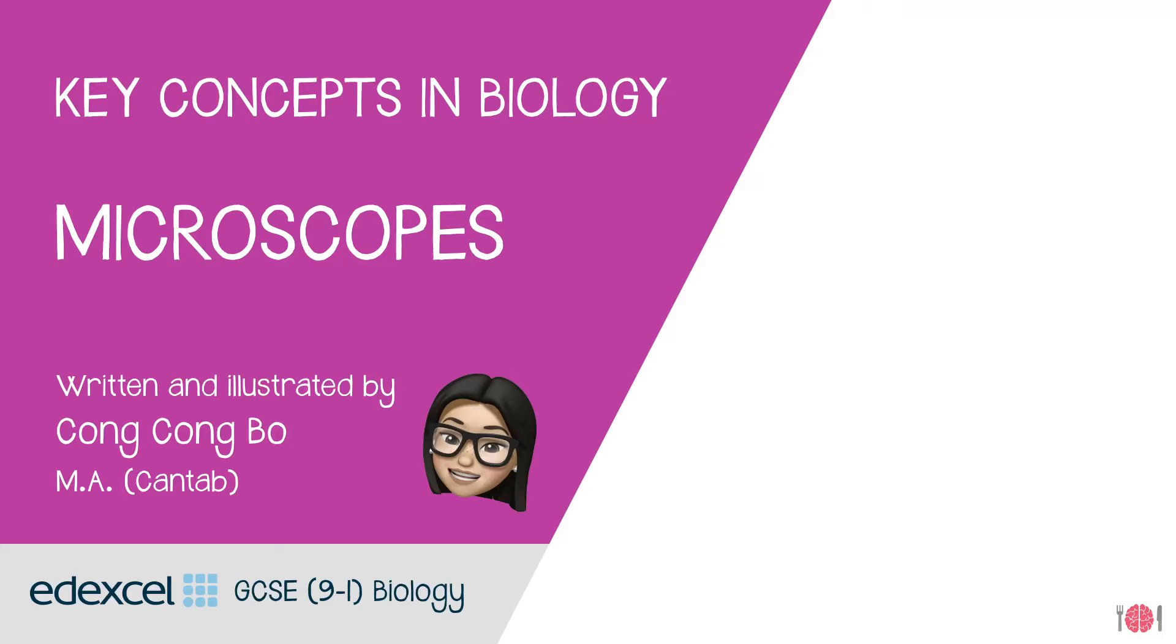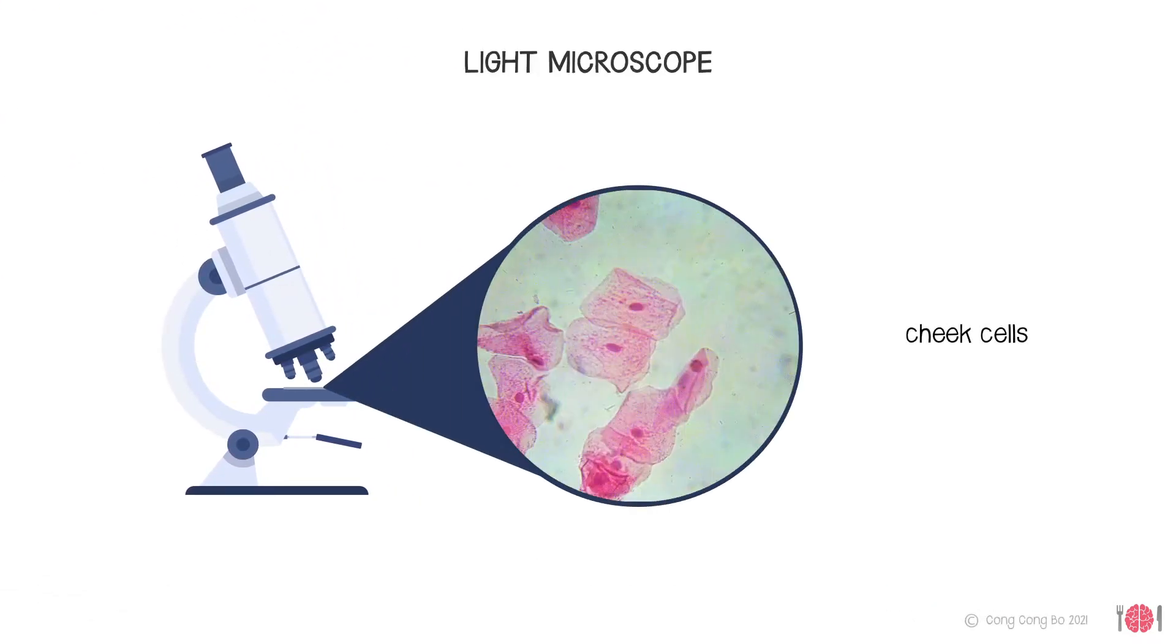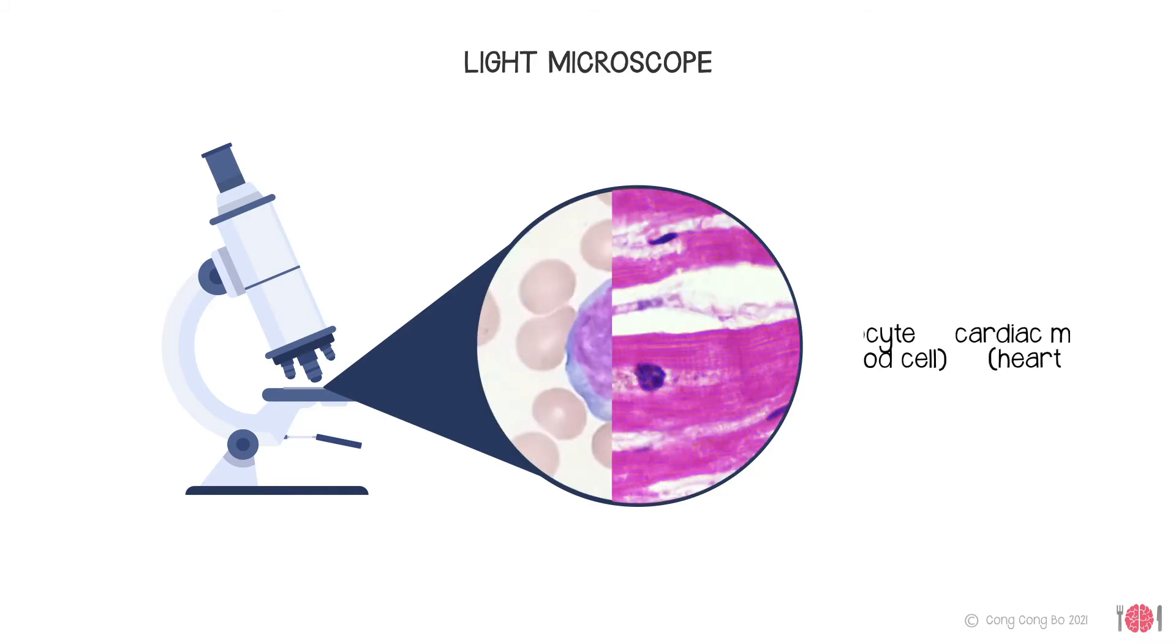Hello biologists! In this video I'm going to help you understand how microscopes work and the difference between light and electron microscopes. Microscopes enable us to see objects that are too small to see with the naked eye by magnifying them.